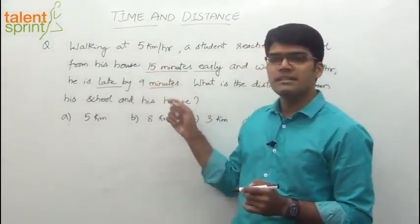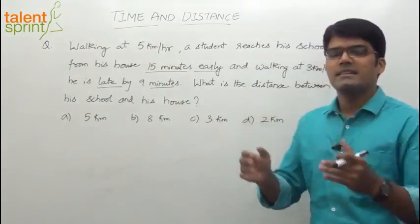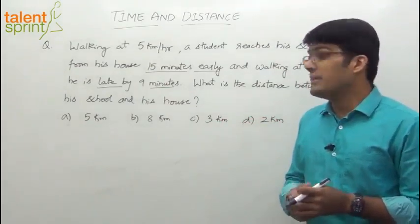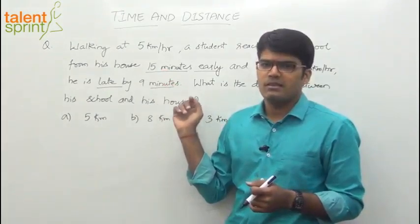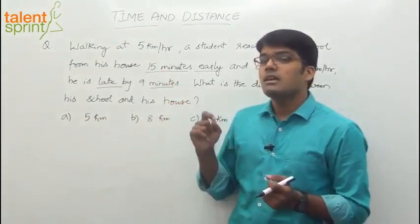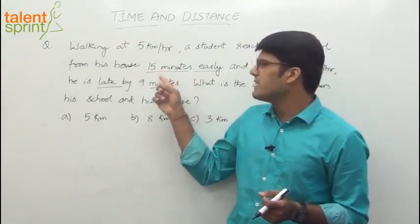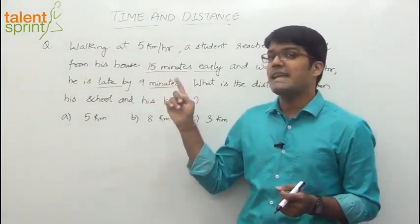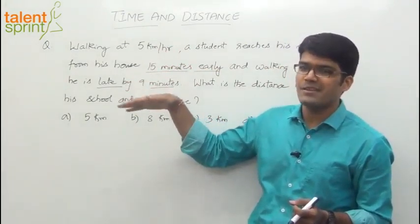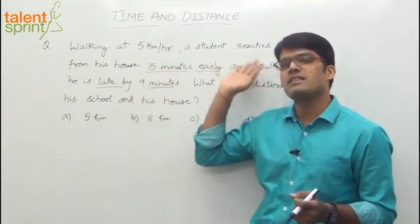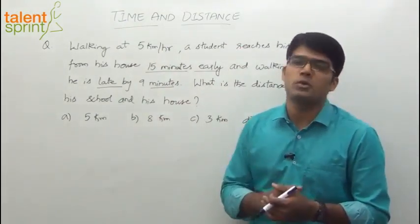What is the difference between these two times — 15 minutes early and 9 minutes late? The net difference is not 6 minutes. If you observe only the magnitude, you would say 15 minus 9 is 6, but if you look at the sign, early is on one side of the axis and late is on the other side. So the difference between these two times should be considered as 15 plus 9, which is 24 minutes.